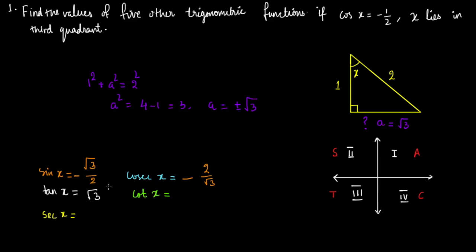And then cot x would be the reciprocal of this, which is one by root three. Let's check the signs. Since the angle is in the third quadrant, tan x is positive. Consequently, cot x would also be positive.